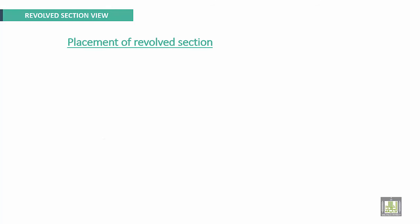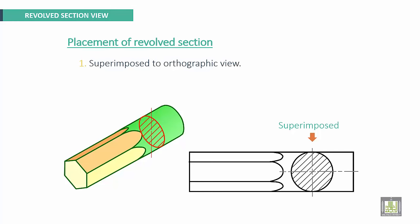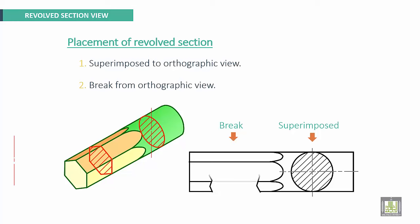Placement of revolved section: for this example, the cross section will be superimposed onto the orthographic view, on the same view but revolved. It can also be broken from the orthographic view — for example, we make a small break and draw it, revolving it for the hexagon cross-sectional shape.